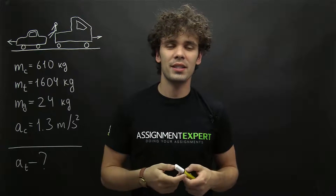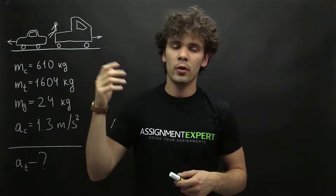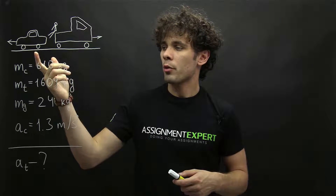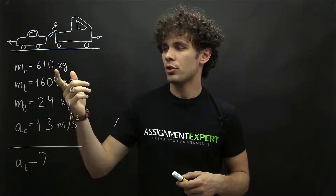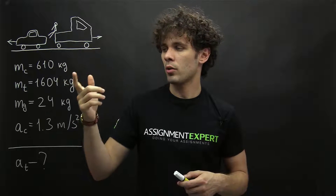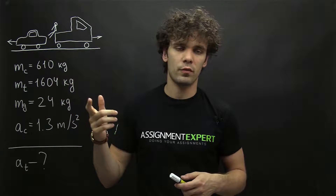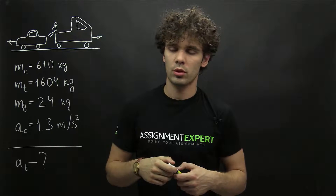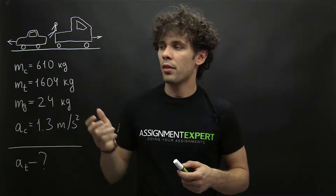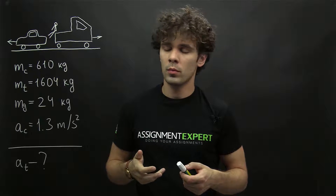Hi guys! This is Simon Expert. Let's take a look at this picture over here. We have a small car weighing 610 kilos parked behind a truck weighing 1604 kilos. The brakes of both cars are off and they're on a level road, so they're free to roll.